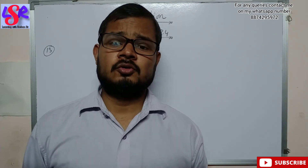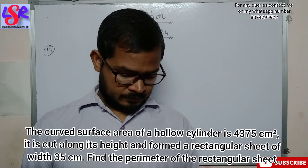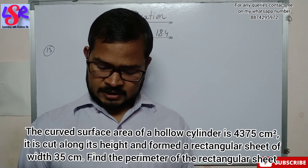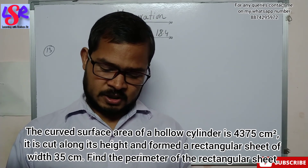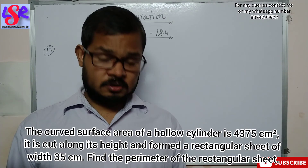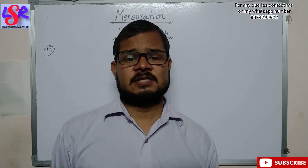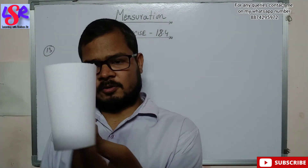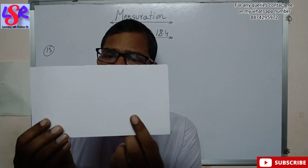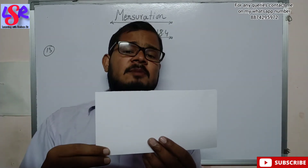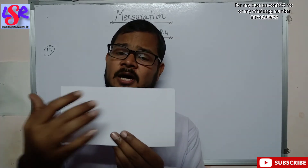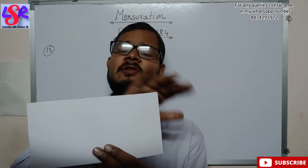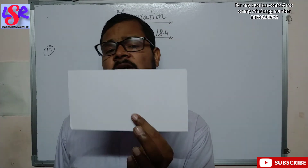Now question number 13: the curved surface area of a hollow cylinder is 4375 square centimeter. It is cut along its height and forms a rectangular sheet of width 35 centimeter. Find the perimeter of the rectangular sheet. The cylinder is opened up — its height becomes the width of 35 centimeter — and using the curved surface area and width we find the length, then calculate the perimeter.